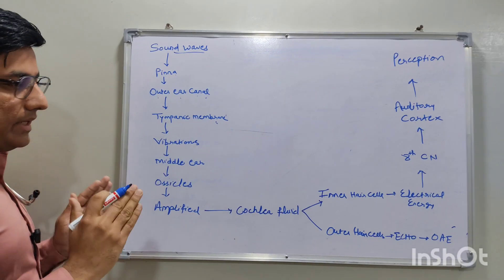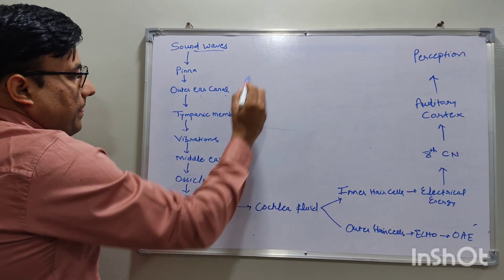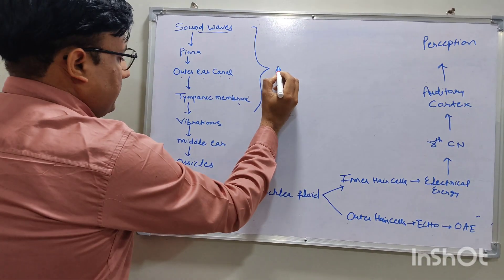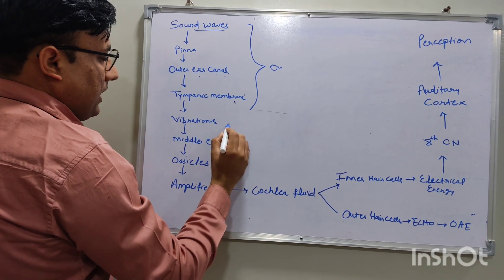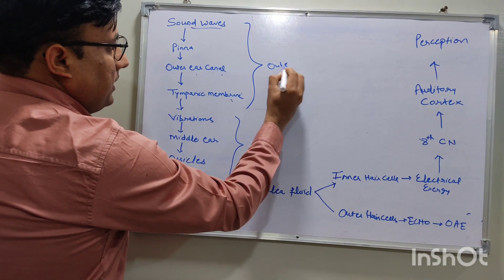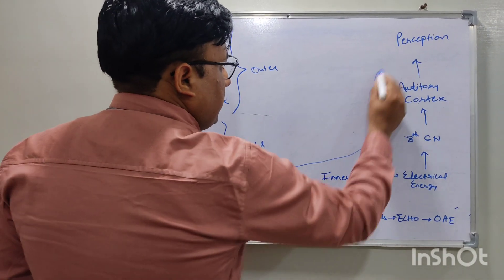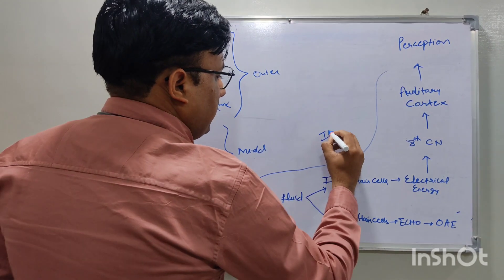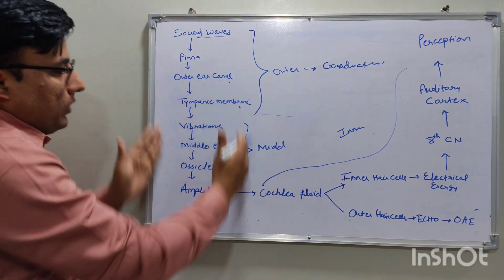This completes the full cycle of the hearing process. Looking at the anatomy: the outer ear goes up to the tympanic membrane, after which is the middle ear, and after that is the cochlea, which is part of the inner ear.